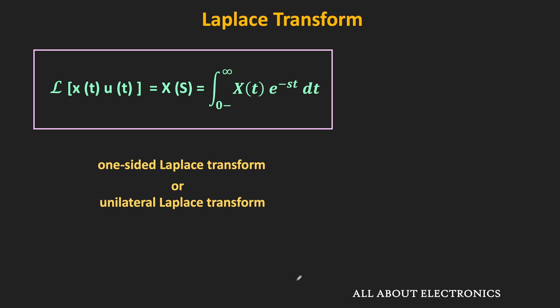If the function exists only for t greater than or equal to 0, then it is generally represented as x(t)·u(t), where u(t) is the unit step function. During our discussion, even if the function is not represented this way, we will assume it exists only for t ≥ 0. That means we are going to use only the one-sided Laplace transform.